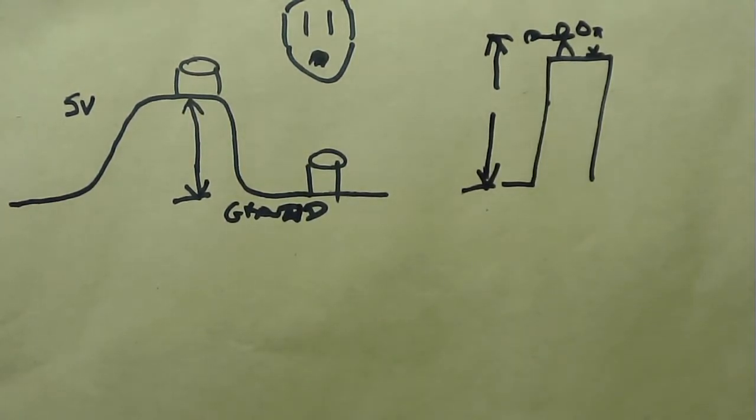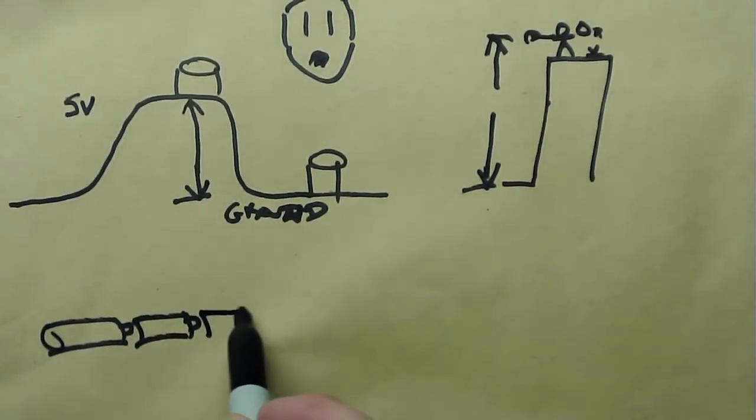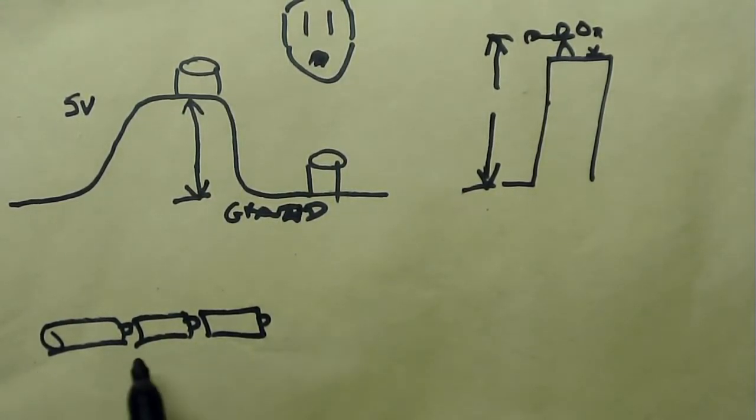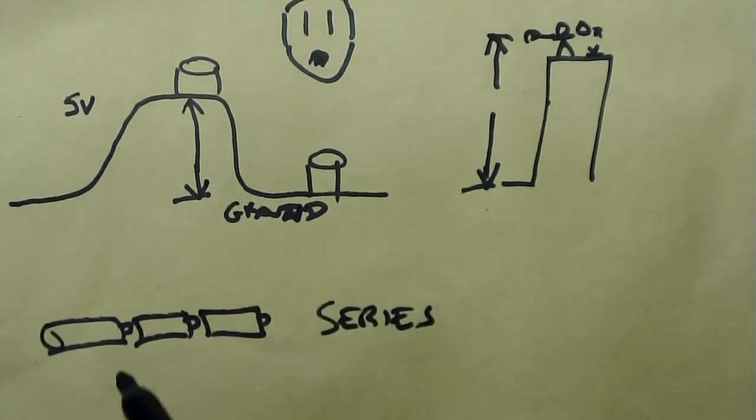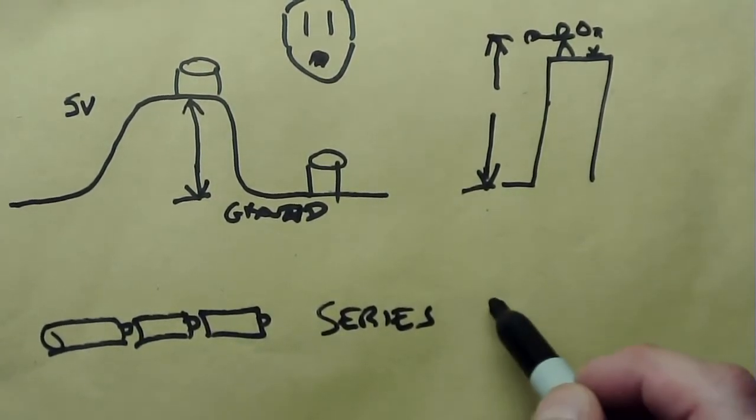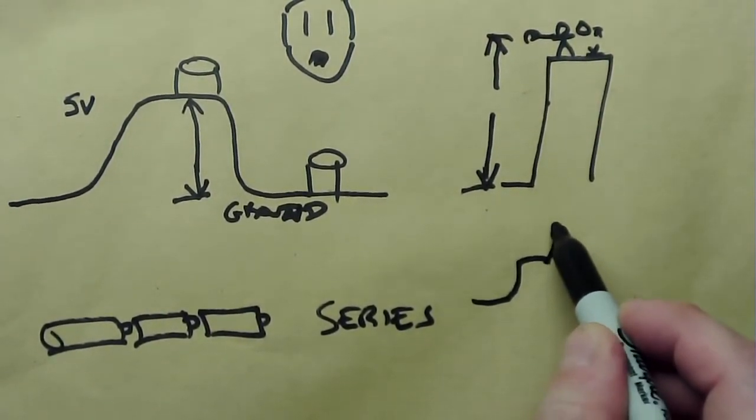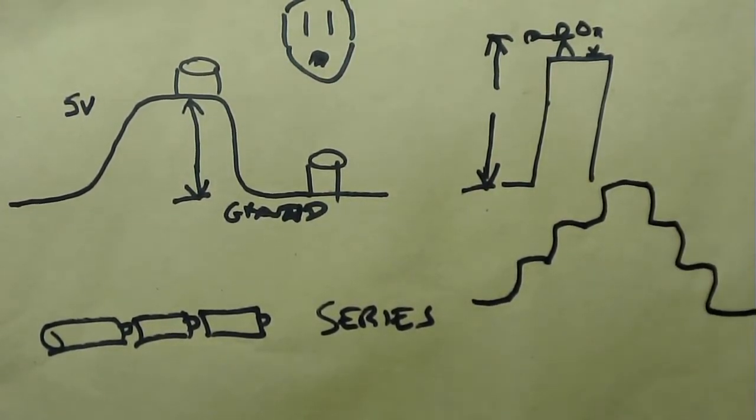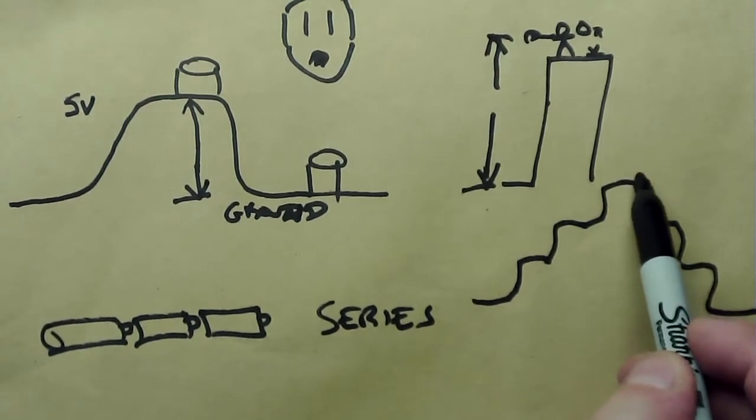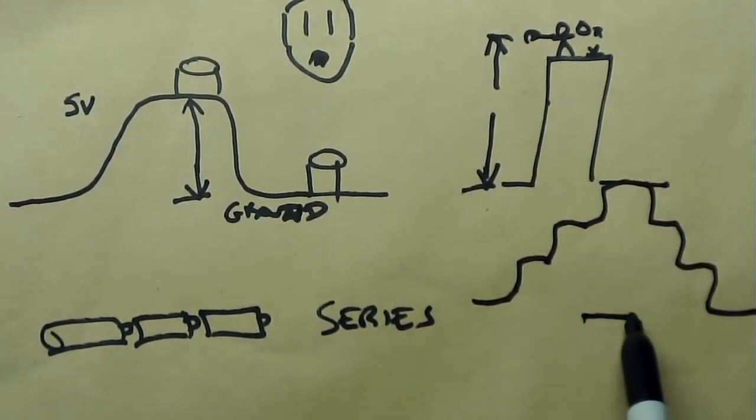So you may be familiar with putting batteries into some sort of an electronic device that you have at home. And this, when we put batteries in series like this, we are essentially adding a hill on top of a hill on top of a hill. So now we are re-establishing our high and low voltage.